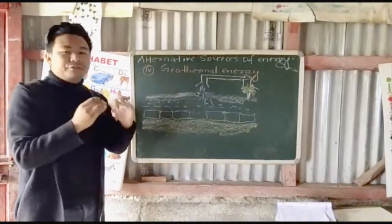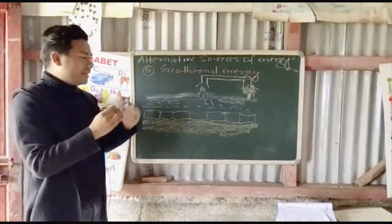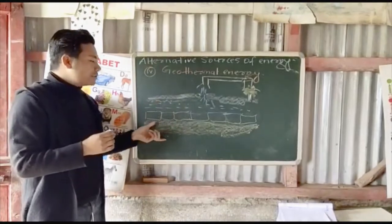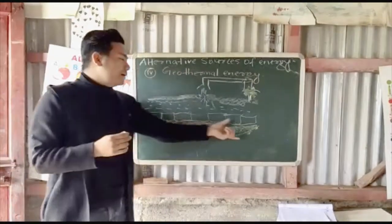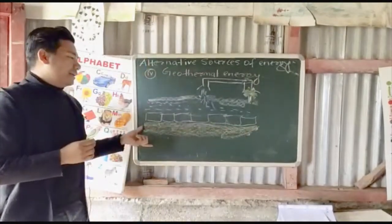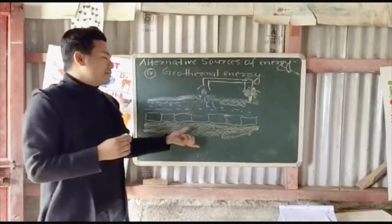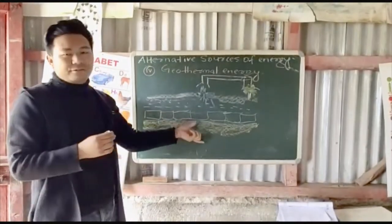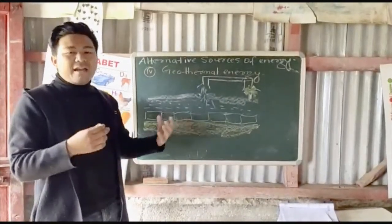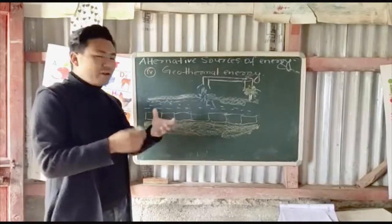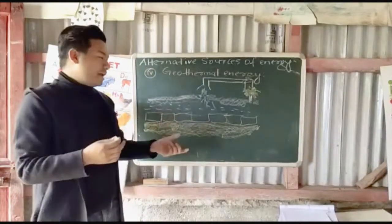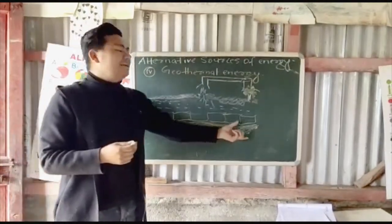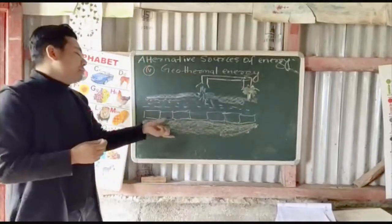We all know that the earth is divided into many layers — the crust, mantle, and the core. If you look at the core part, there is a molten substance called magma, which is at very high temperature.